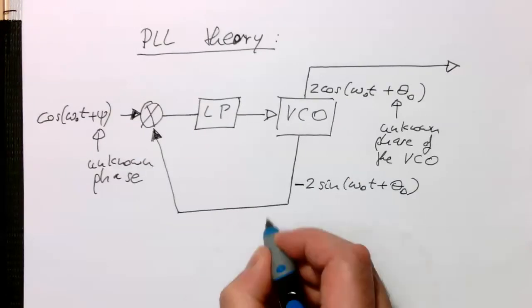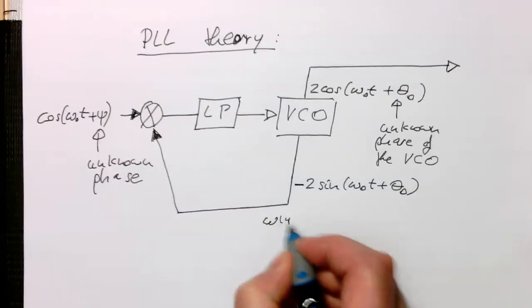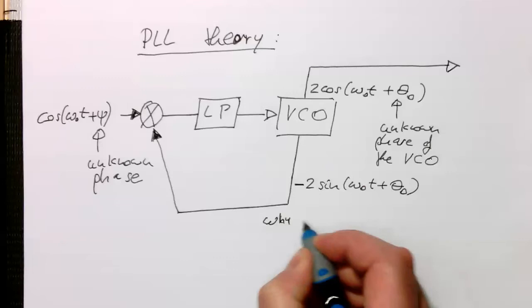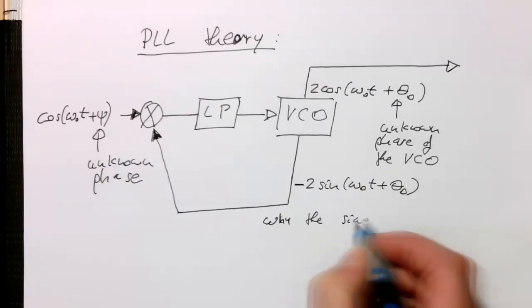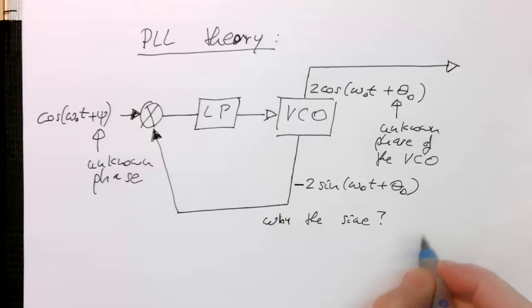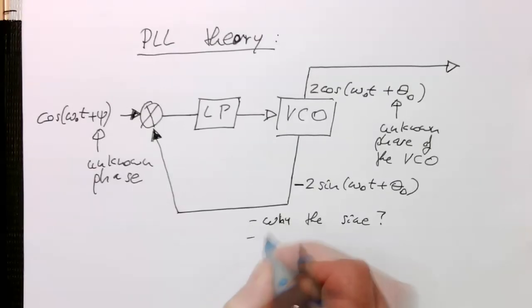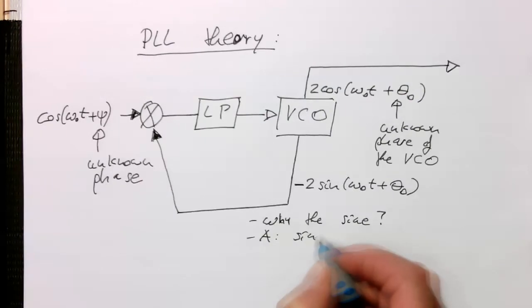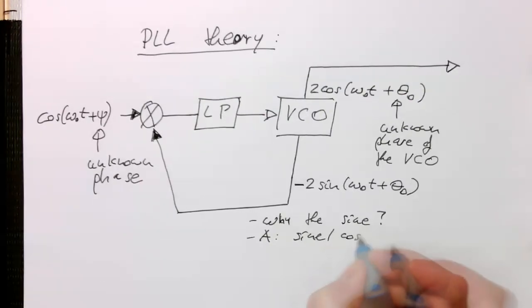So why is the sine? And the answer is of course because sine and cosine are orthogonal.